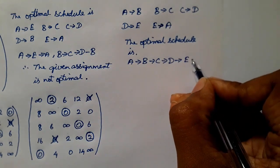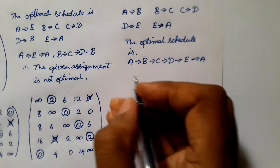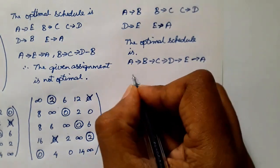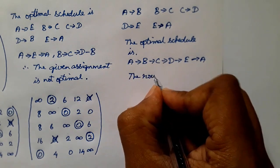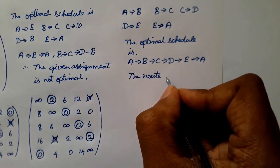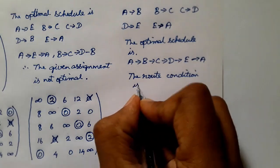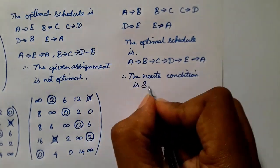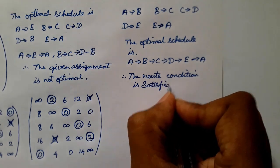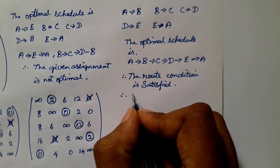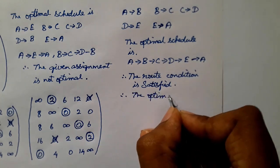Going through A, B, C, D, E again — the route condition is satisfied. So finally the optimum traveling cost is determined.